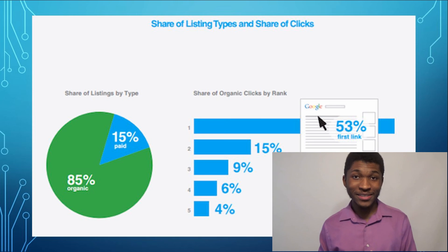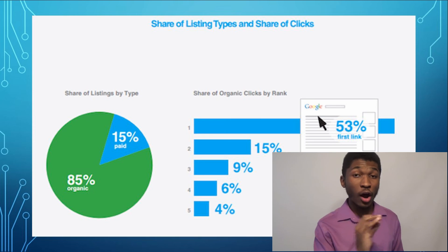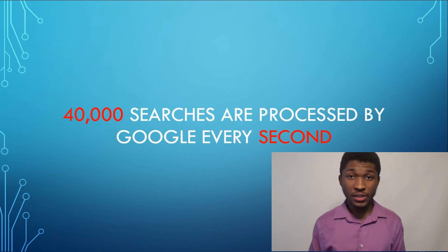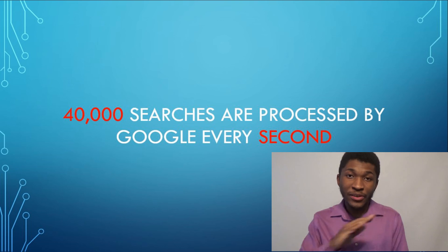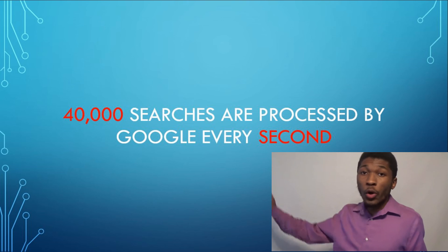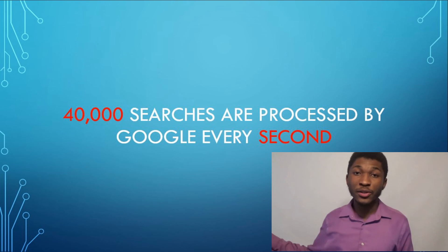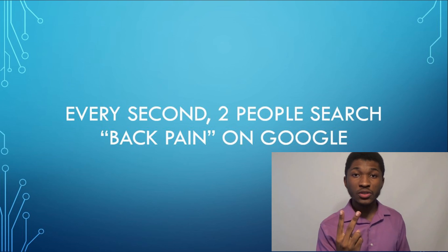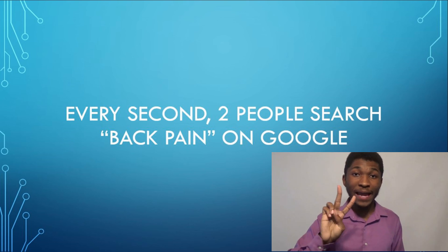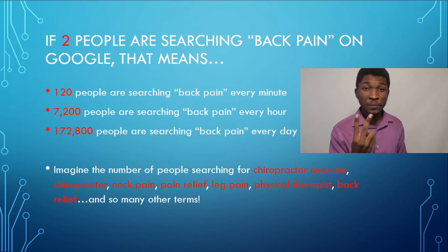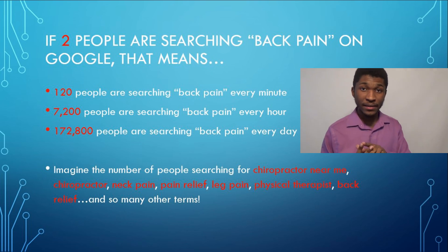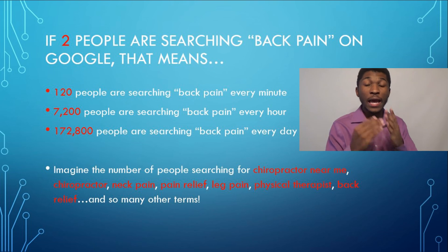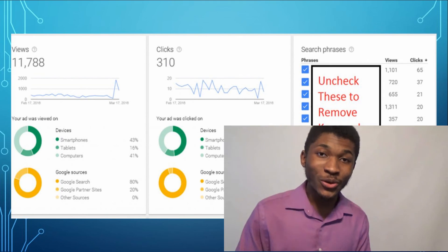40,000 searches on Google are processed every single second — all over the world, people are looking up all kinds of things. Two of those searches every second are specifically for 'back pain.' So when they do that, your chiropractic business needs to shoot up to the top so they can click on it and become a client of yours.